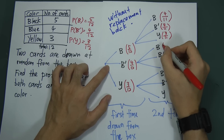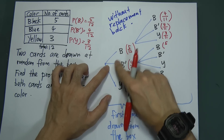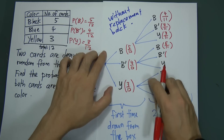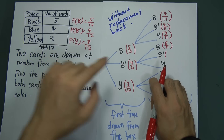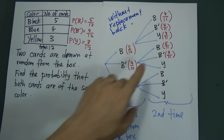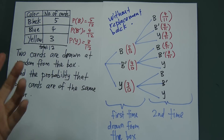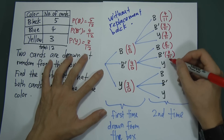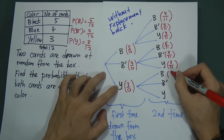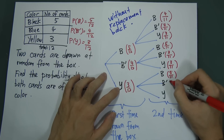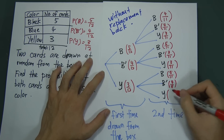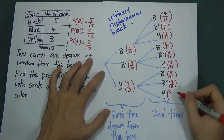If the first time you get blue, then for the second draw: black remains 5 over 11 because you didn't take a black card. Blue becomes 3 over 11 because you already took one blue card, leaving three. Yellow remains 3 over 11. And if the first time you get yellow, then second draw: black is 5 over 11, blue is 4 over 11, yellow is 2 over 11.